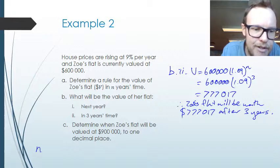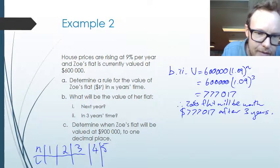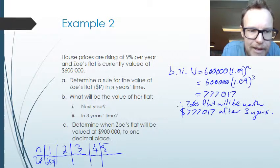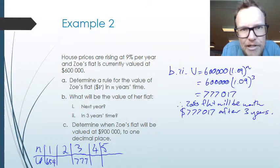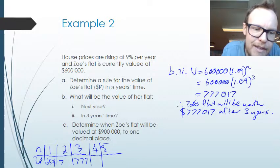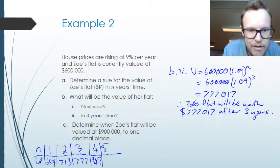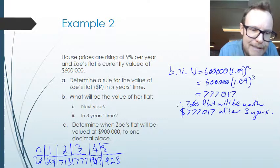We create a table of values for n and V: after 1 year $654,000; after 2 years $713,000; after 3 years $777,000; after 4 years $847,000 — almost at $900,000 but not quite; and after 5 years we've surpassed it at $923,000. So the answer lies between 4 and 5 years.